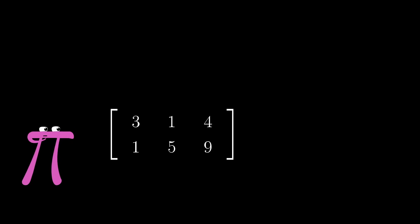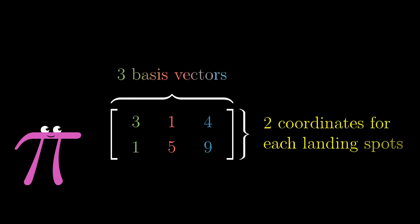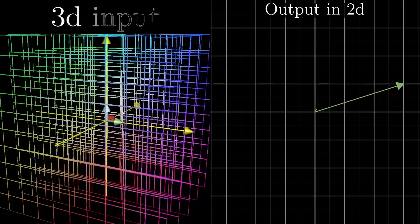Likewise, if you see a 2x3 matrix with two rows and three columns, what do you think that means? Well, the three columns indicate that you're starting in a space that has three basis vectors, so we're starting in three dimensions. And the two rows indicate that the landing spot for each of those three basis vectors is described with only two coordinates, so they must be landing in two dimensions.